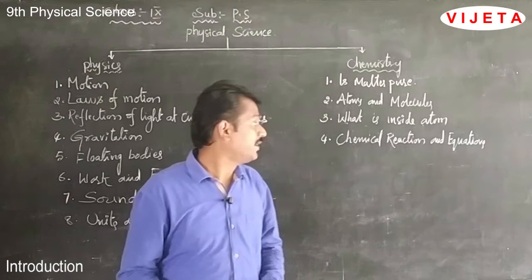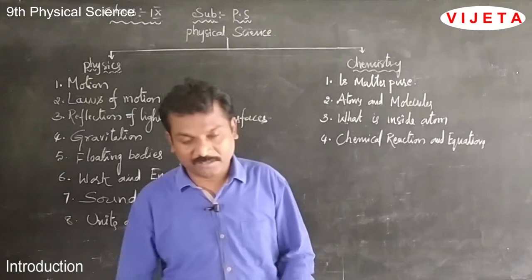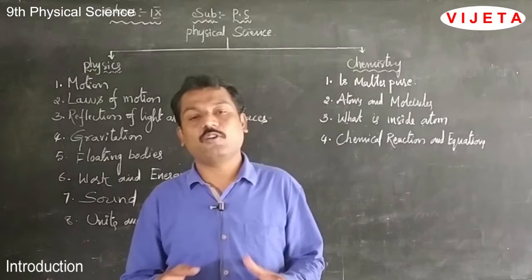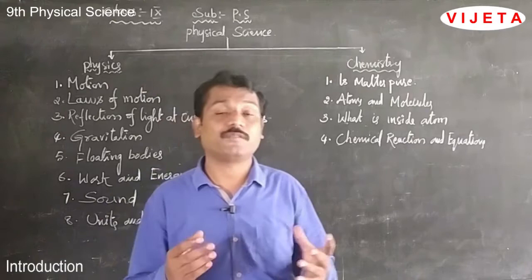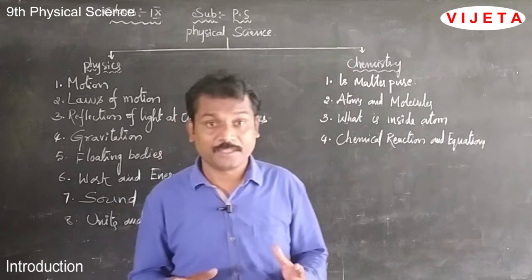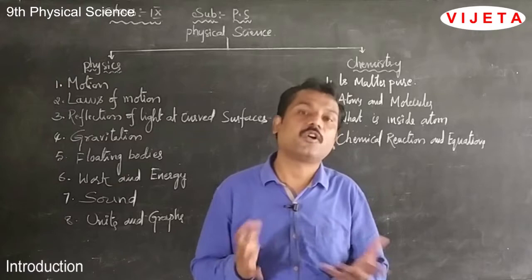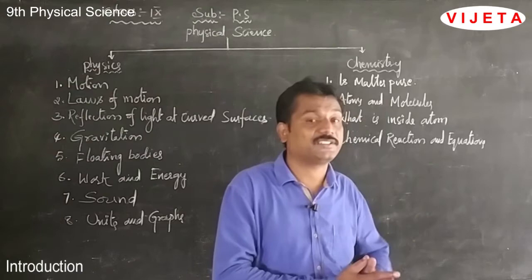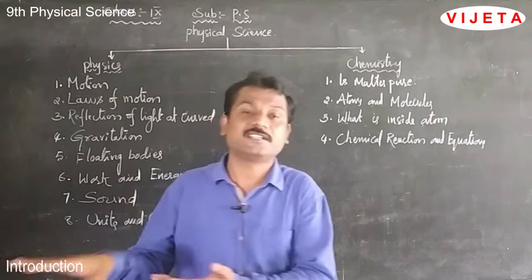Coming to chapter 4, chemical reactions and equations. In our daily life we observe many chemical reactions. A chemical reaction expressed in terms of symbols and formulas is called a chemical equation. In this chapter we will discuss why we need to balance a chemical reaction — to satisfy the law of conservation of mass, mass is neither created nor destroyed. The number of atoms participating in a reaction must equal the number of atoms in the product, so we must balance the chemical reaction.